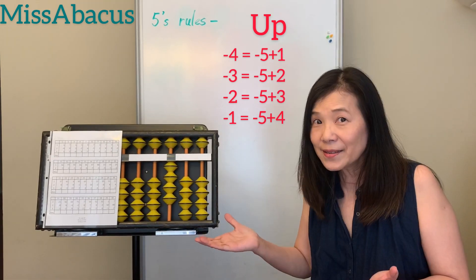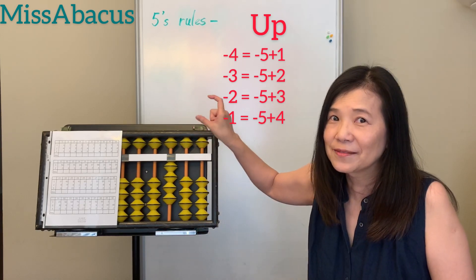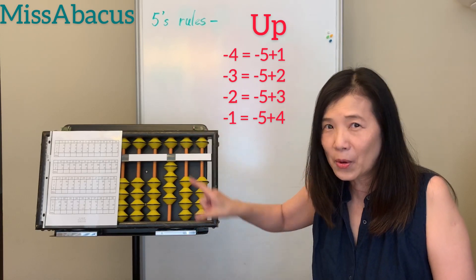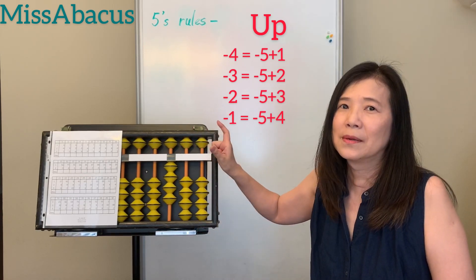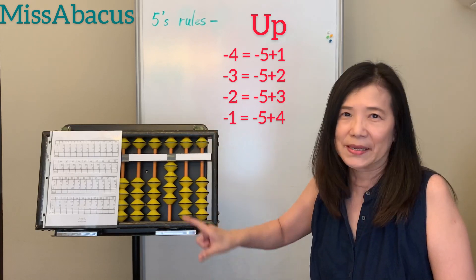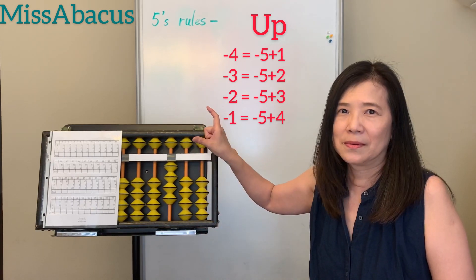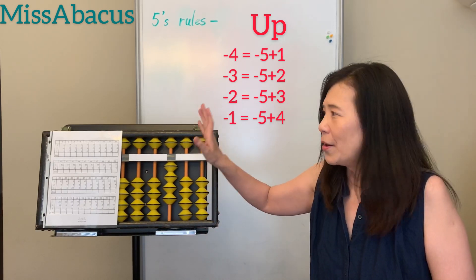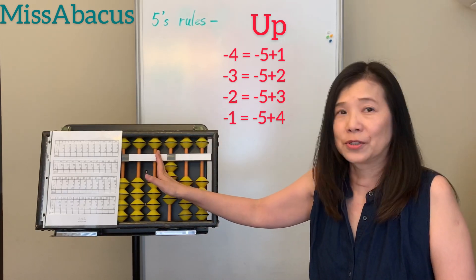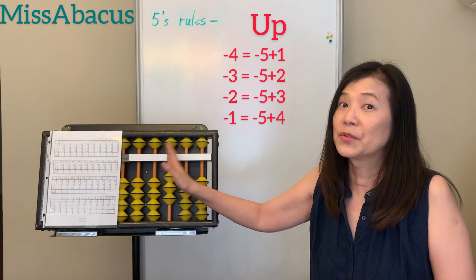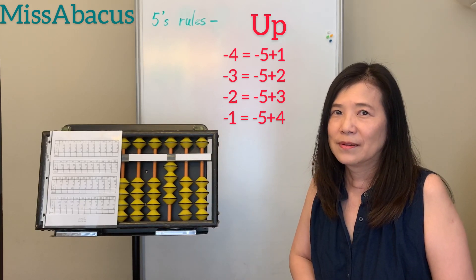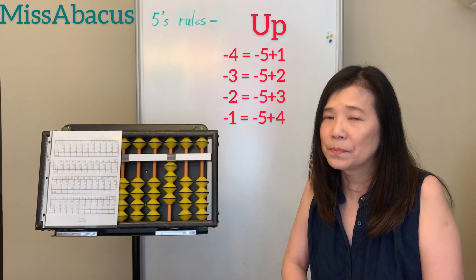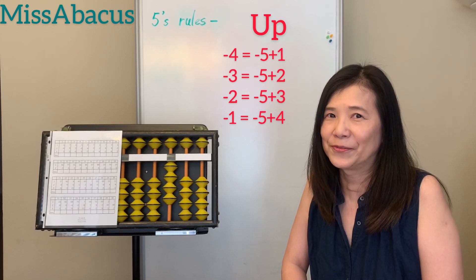Easy? Just change the direction. Down 5, up 5, up 4. Plus it's down, minus it's up. You don't need to touch the 10's, because 5's is enough for doing plus or minus 1, 2, 3, 4.